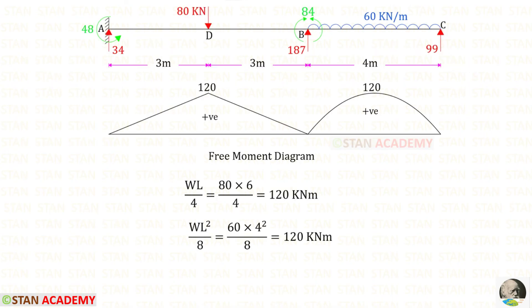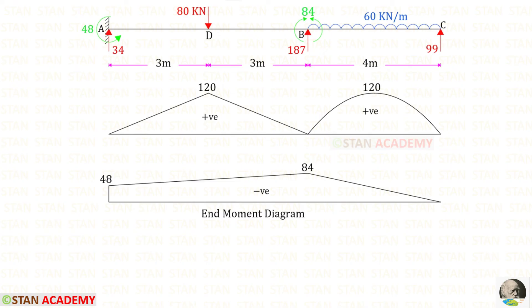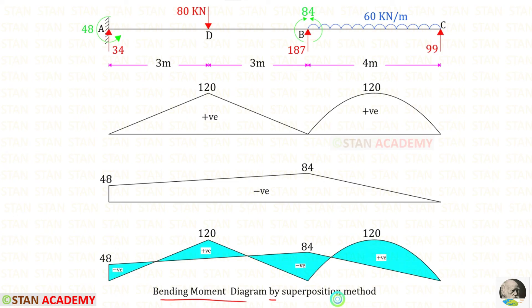Now we are going to draw the bending moment diagram by the superposition method. First we assume every span as a separate simply supported beam and use standard formulas to find the maximum bending moments, drawing two free BMD diagrams. Then using the end moments at A and B, we draw the end moment diagram. Since both moments are hogging, the end moment diagram is negative. By combining these two diagrams we obtain the final bending moment diagram by superposition.